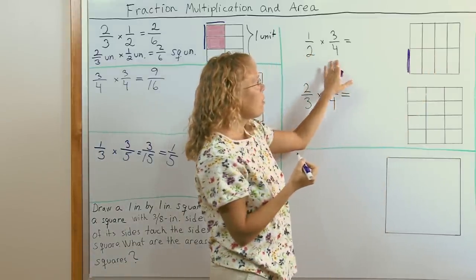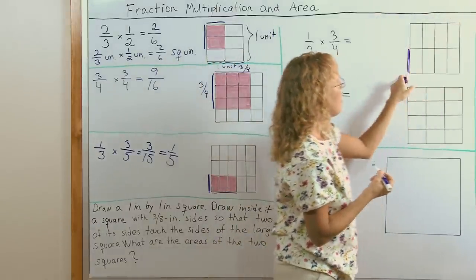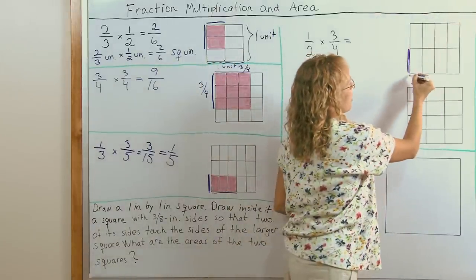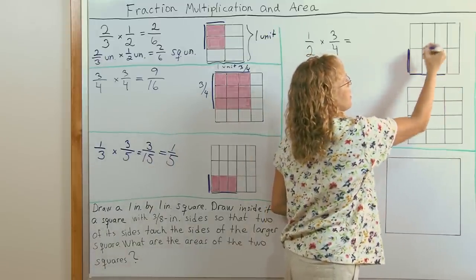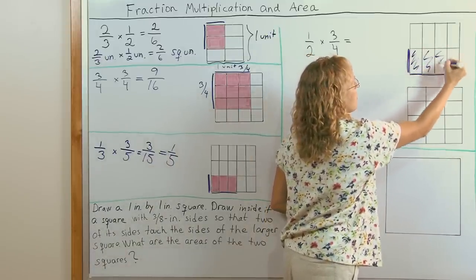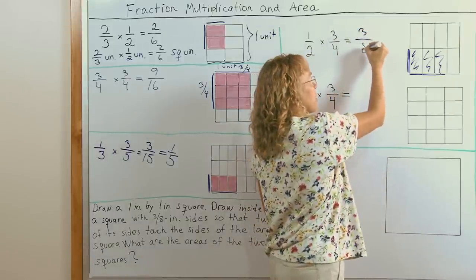And then three fourths. It's going to be this side now or this side. But I want my rectangle here. So I'll choose this three fourths: one, two, three fourths of the unit. And so now I color this rectangle here. And the answer is three eighths of a square unit.